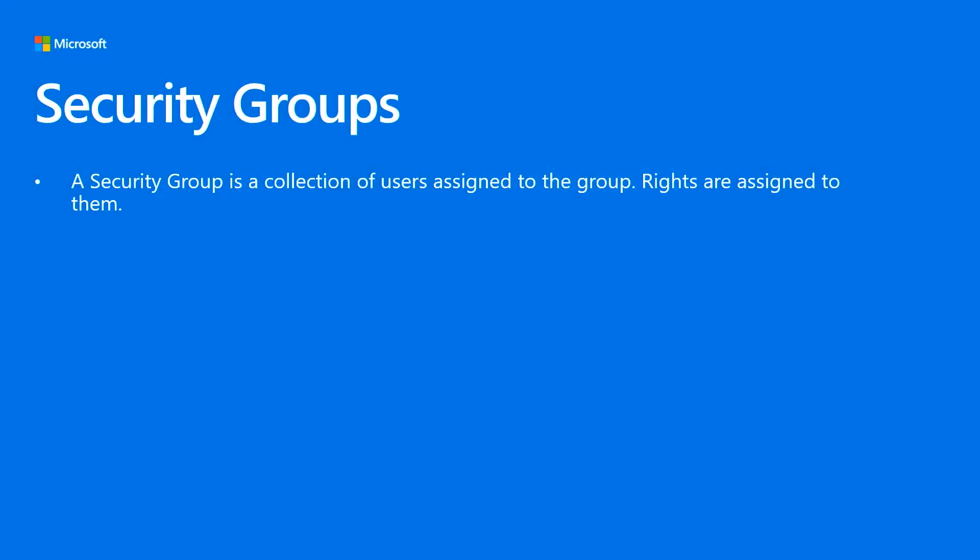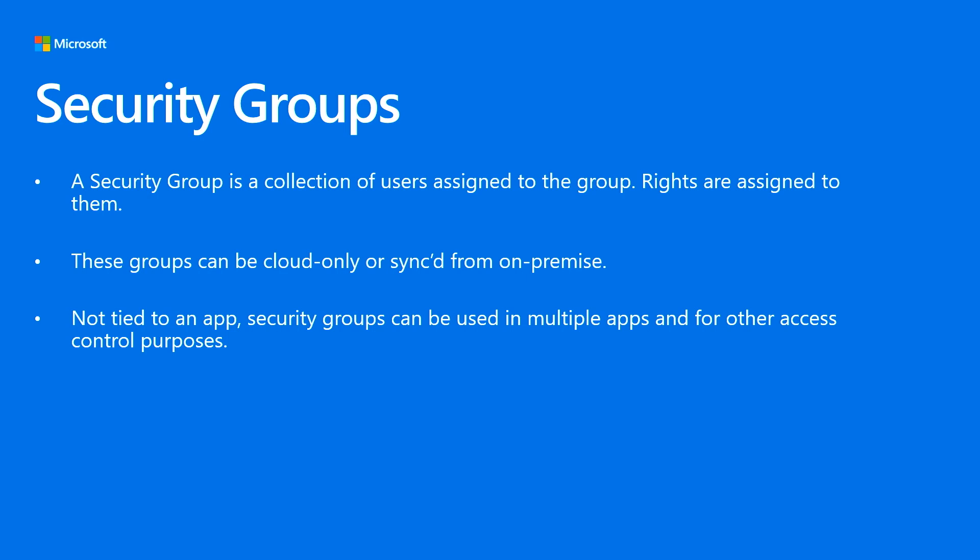How about security groups? Sometimes customers want to use security groups in their code as well. Security groups are a collection of users assigned to a group, and you can assign rights to that security group. They can be cloud-only — existing only in Azure Active Directory — or they can come from your on-premises Active Directory and be synced to Azure AD. Groups are typically not tied to an application; they are generally available to anybody in the organization, so they can be used in multiple apps.